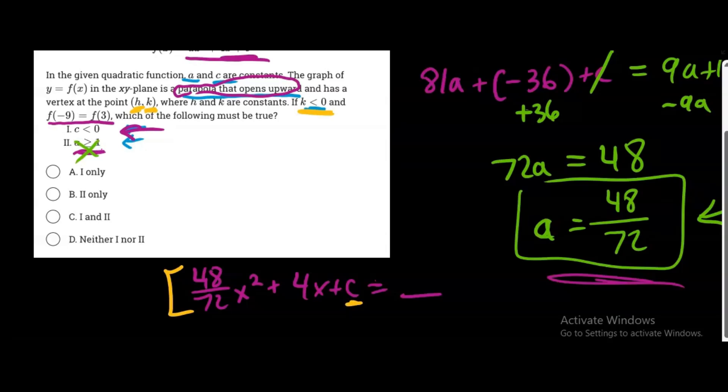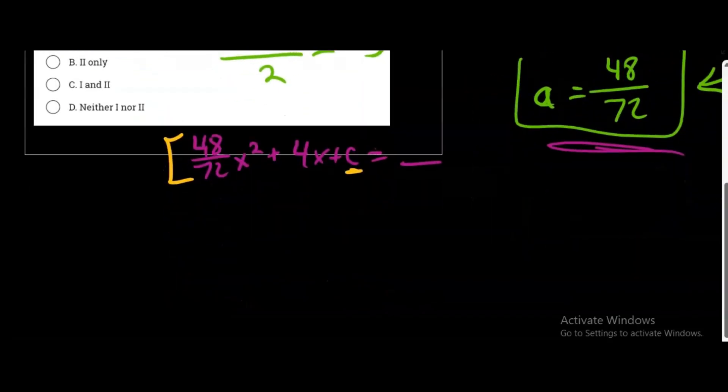So how do we find h? Well, it's actually pretty interesting because the parabola is symmetrical, right? And we know these two, f of negative 9 and f of 3, they're equal to each other. They have the same y-coordinate values. And so their corresponding x-coordinate values are going to be equal distant away from the vertex. And so what we can do is just do negative 9 plus 3 over 2. We're just finding the middle of those x-coordinates. So this gives us negative 6 over 2. That's negative 3. So now we have the h-value, the x-coordinate of the vertex. So we can plug this negative 3 into our equation.